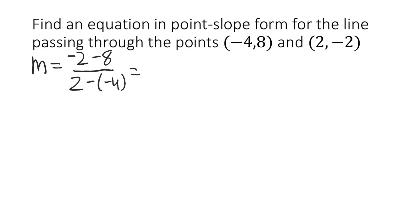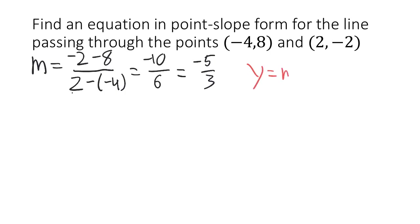So negative 2 minus 8 is negative 10. 2 minus negative 4 is 2 plus 4, which is 6, and that simplifies to negative 5 over 3. Now we're in a position to apply the point-slope form: y equals m times (x minus x1) plus y1.